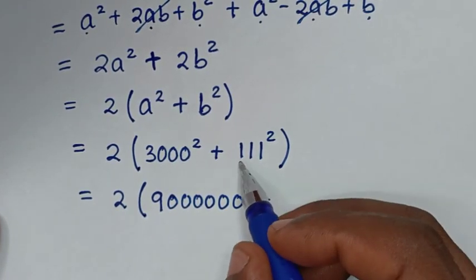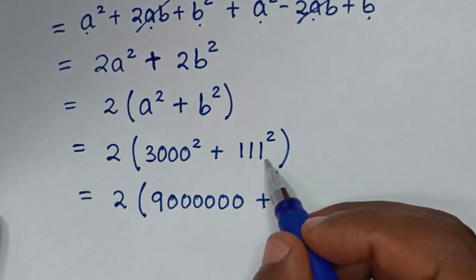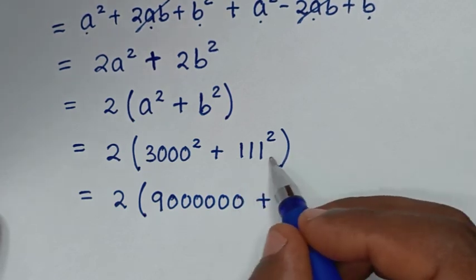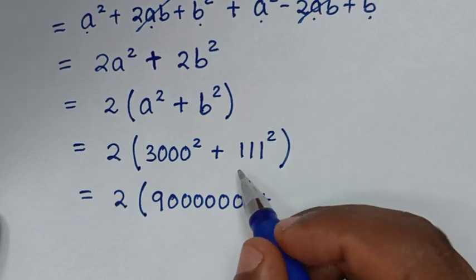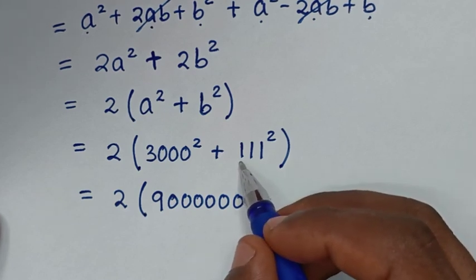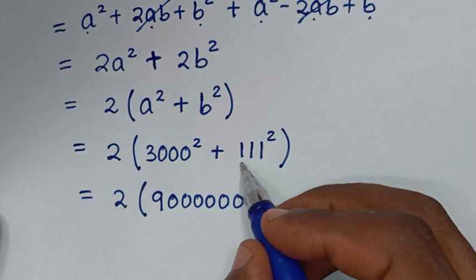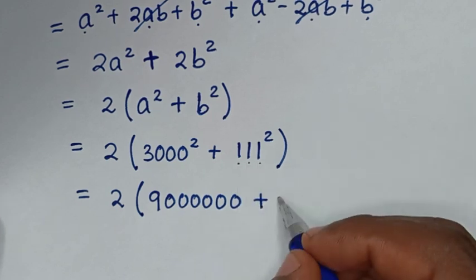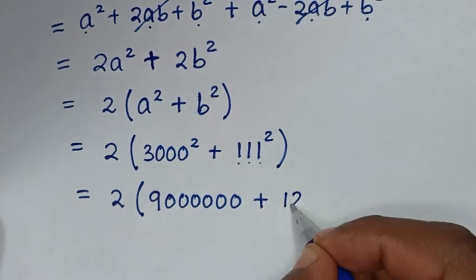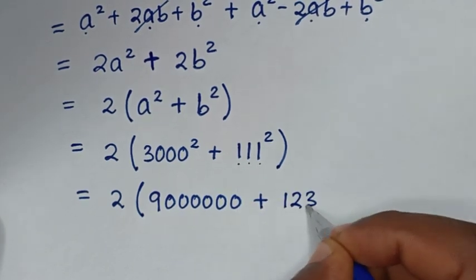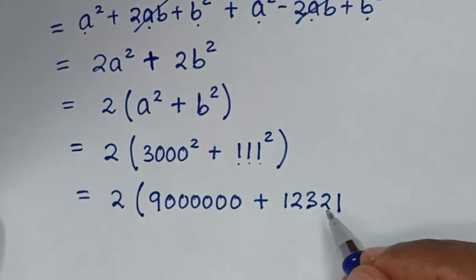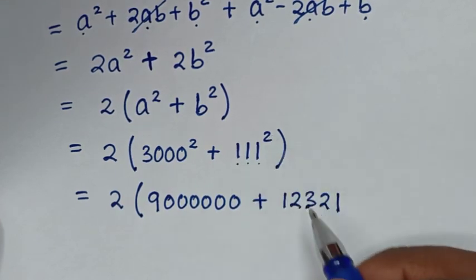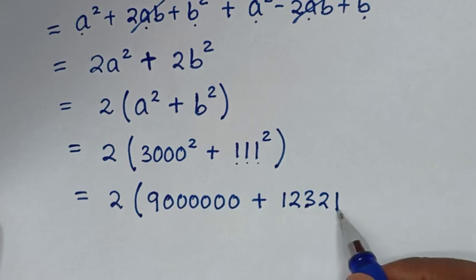Plus 111 squared, which is the same as 111 times 111. Now, from this 111, we have a simple trick for 111 times 111: since we have 3 digits, we write 1, 2, 3, then decrease back to 2, 1. So 111 squared equals 12,321.